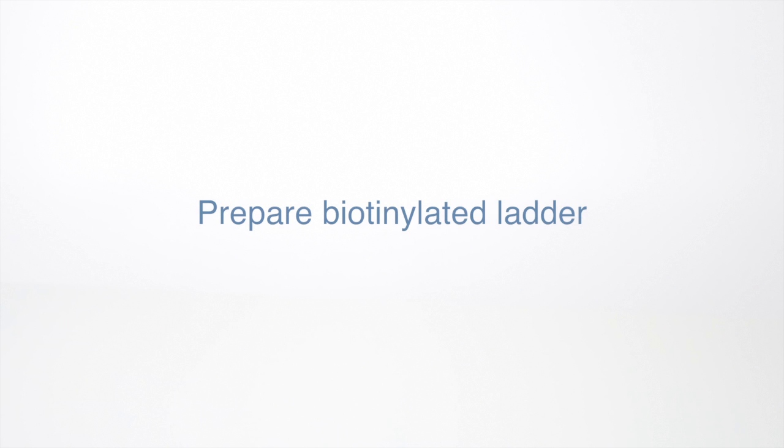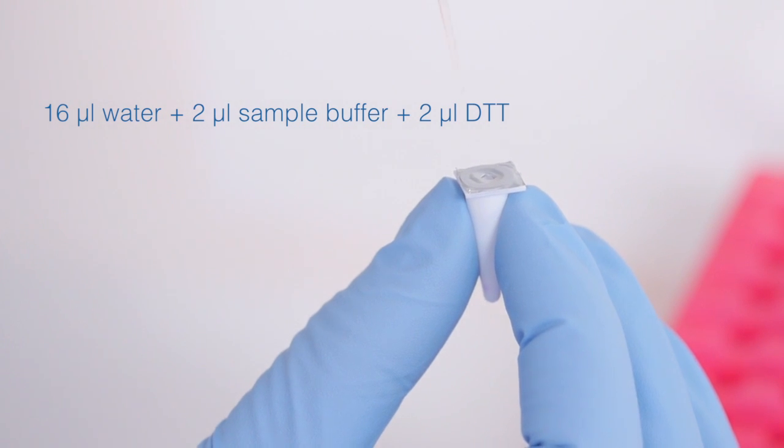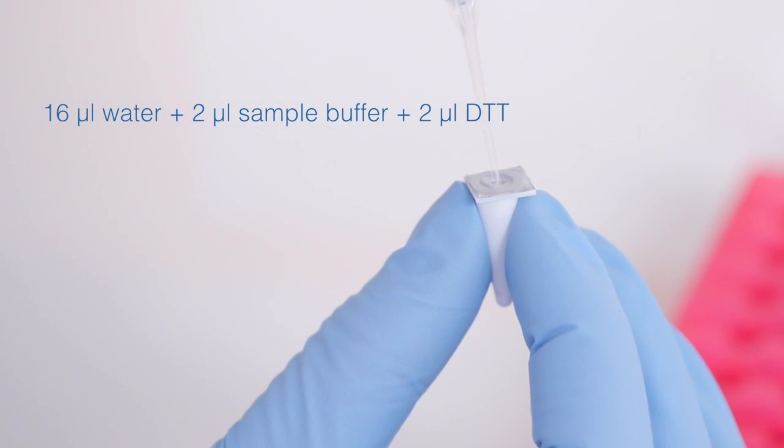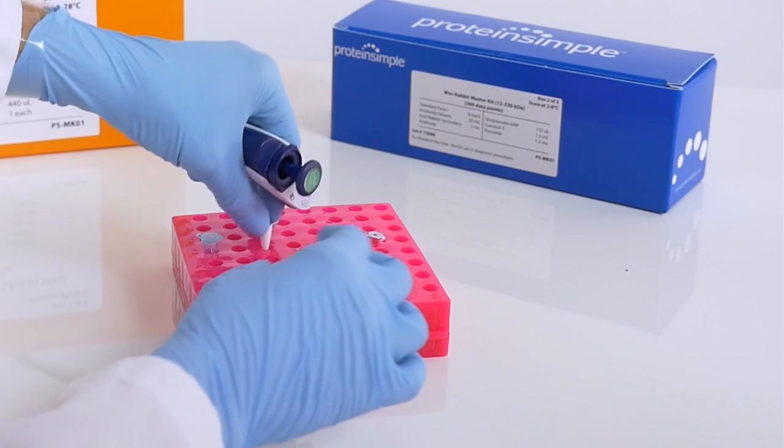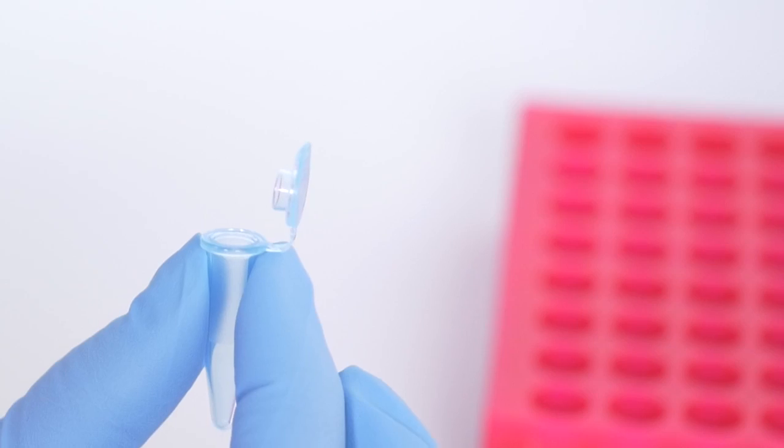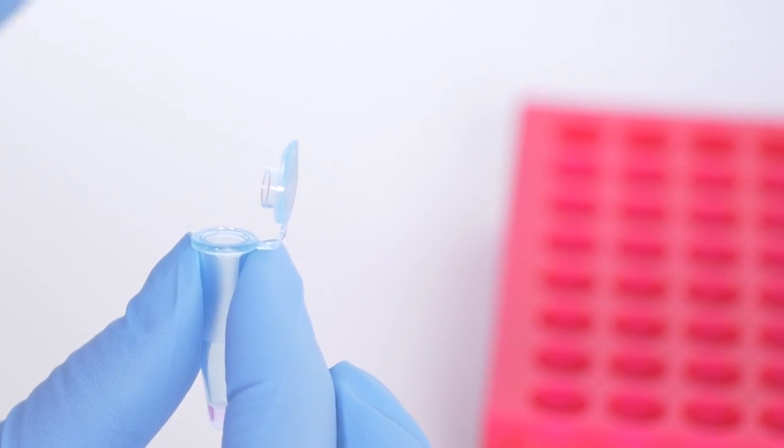To prepare the biotinylated ladder, grab the white tube and add 16 microliters of deionized water, 2 microliters of 10X sample buffer, and 2 microliters of the DTT solution we made earlier. Mix and then transfer the contents into the provided blue tube and close the cap.